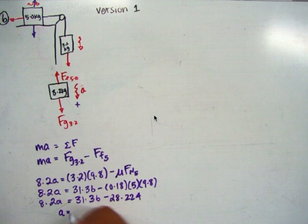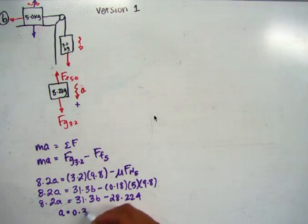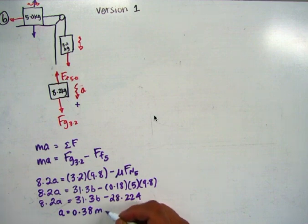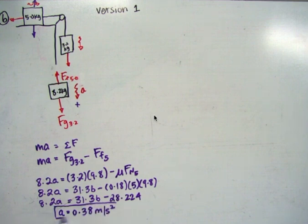Okay, so we have 8.2A equals 31.36 minus times 5 times 0.18 is 28.22. So calculating A, we get 0.38, is that what they get? There's no answer. 0.38 meters per second squared. You can check my answer, and if you get something different, don't assume you're wrong. Check with me, and I'll fix the video.